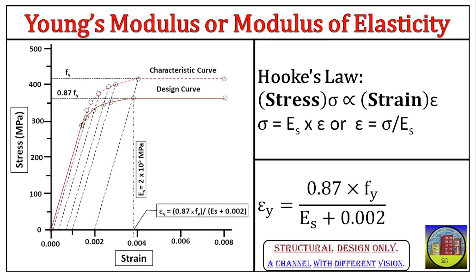This proportional limit signifies the maximum load a material like steel can withstand and still return to its original shape after the load is removed. Think of it as a point of no return for perfect elasticity. Beyond this point, the material starts to deform permanently.